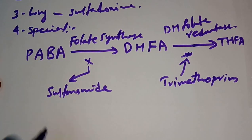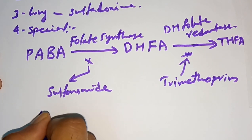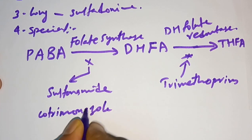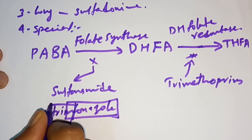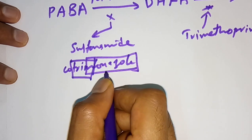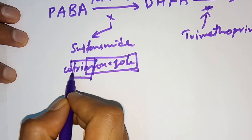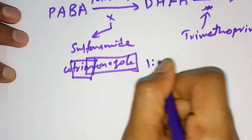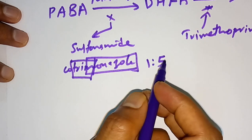Co-trimoxazole is a combination of sulfamethoxazole and trimethoprim. The name 'co-trimoxazole' — 'oxazole' represents sulfamethoxazole and 'trim' represents trimethoprim. It is a combination of trimethoprim and sulfamethoxazole in a ratio of 1:5, that is trimethoprim 1 part and sulfamethoxazole 5 parts.